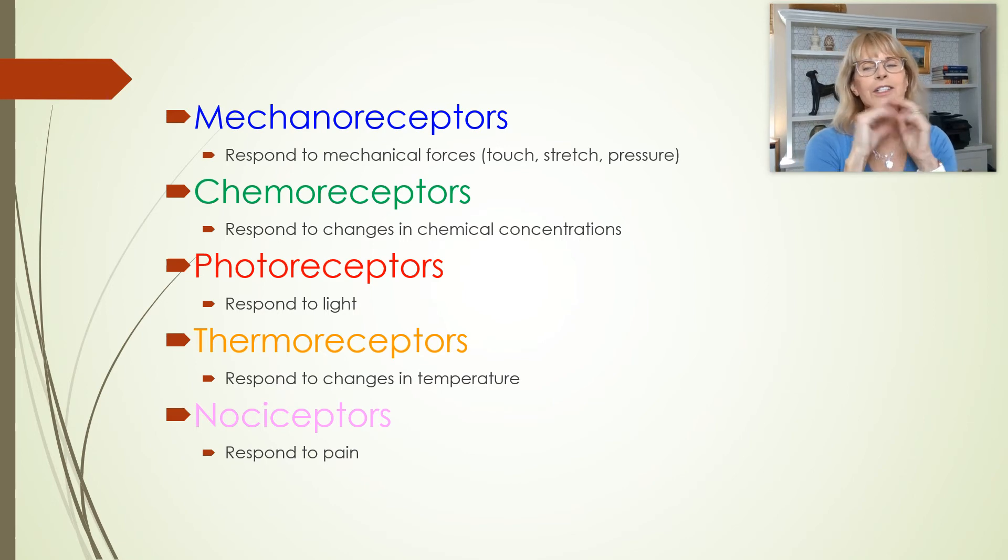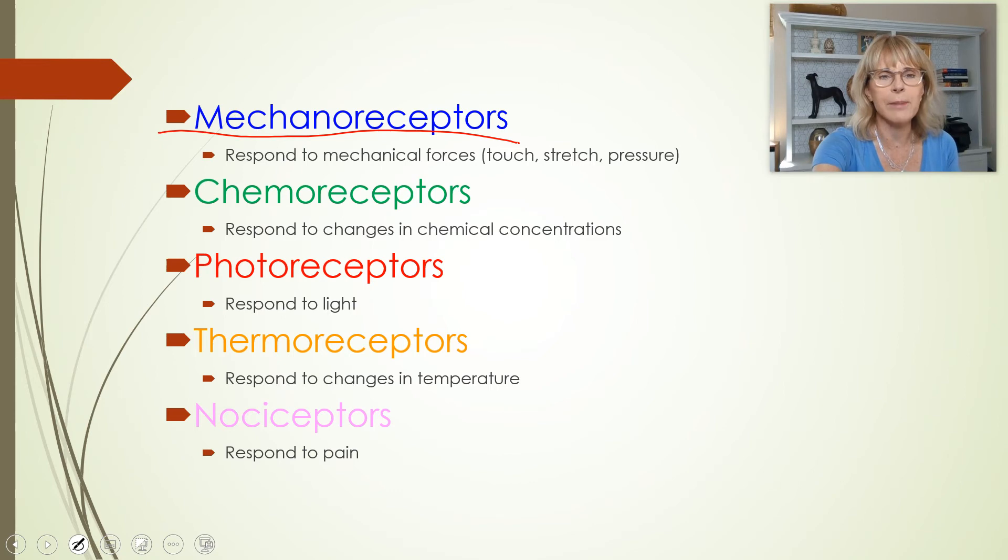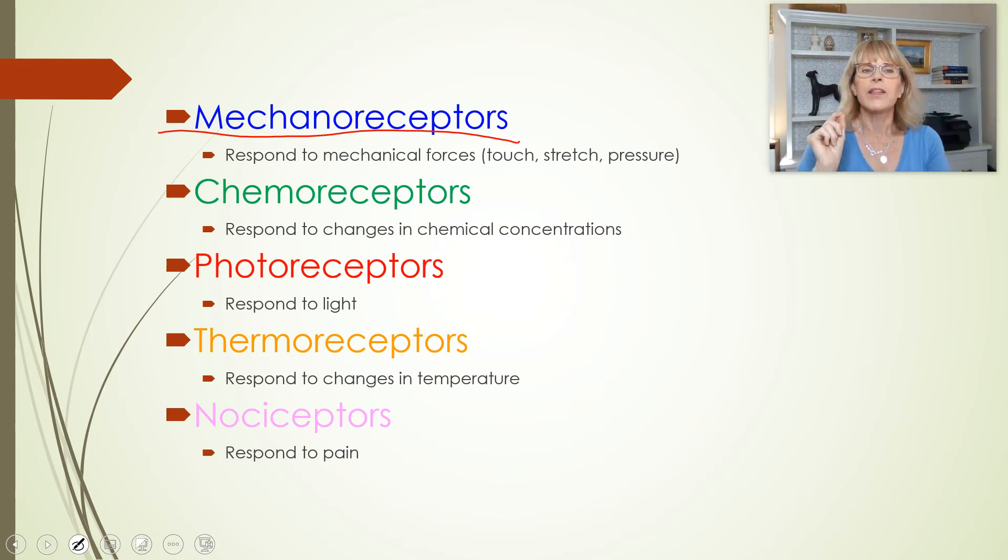Now I want you guys to know that there are different kinds of sensory receptor cells that humans have. The three really important ones that we'll be doing most of our talking about are mechanoreceptors. Mechanoreceptors respond to mechanical forces. So these are receptor cells, and mechanoreceptors, if you stretch the cell or if you push on the cell, then that is what will cause them to send out their action potential.